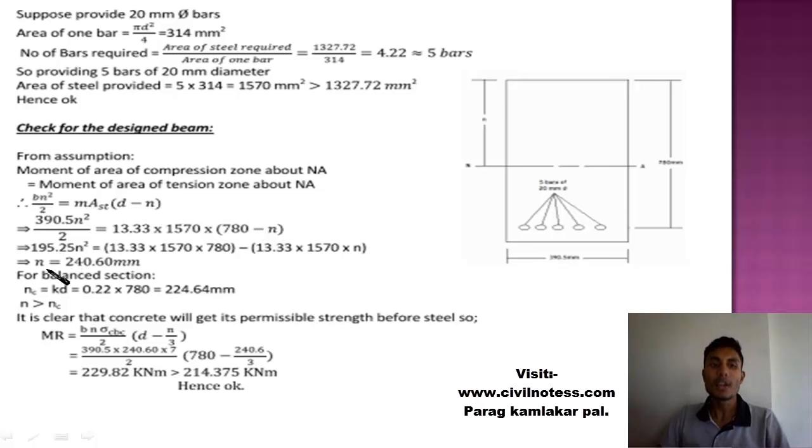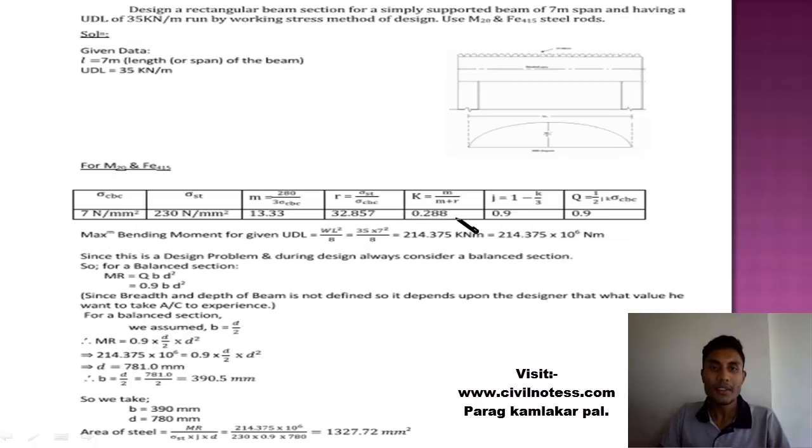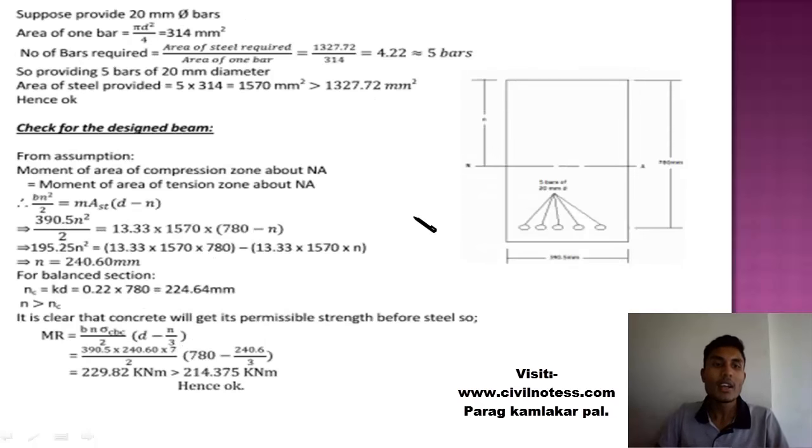Critical neutral axis is given by k into d. We know the value of k, which is 0.288, and we know the value of d, so we get the critical neutral axis. Now compare this condition: yes, this is an under reinforced section. N is greater than NC, that means our depth of neutral axis is greater than critical depth of neutral axis.